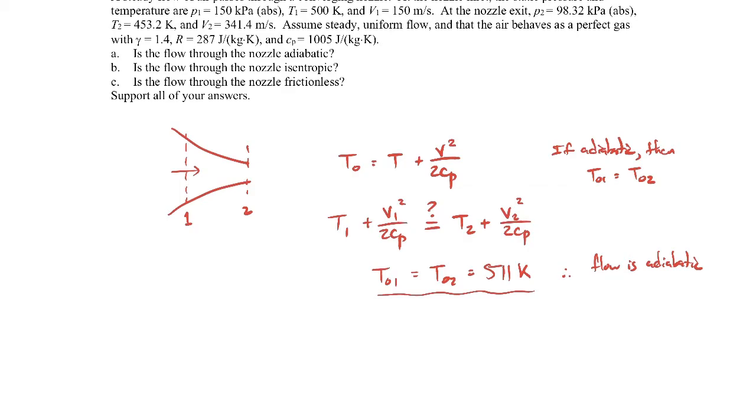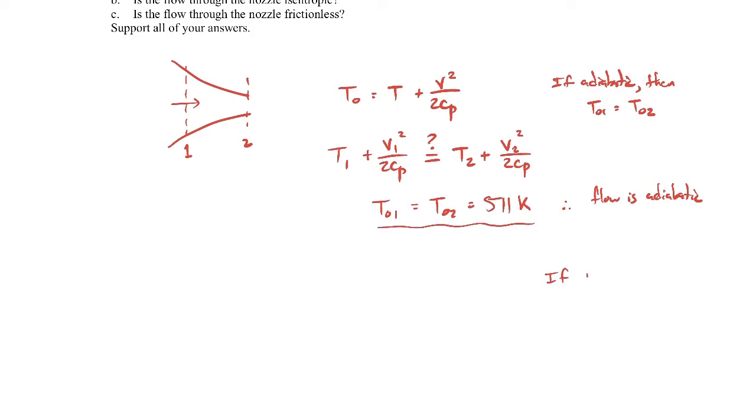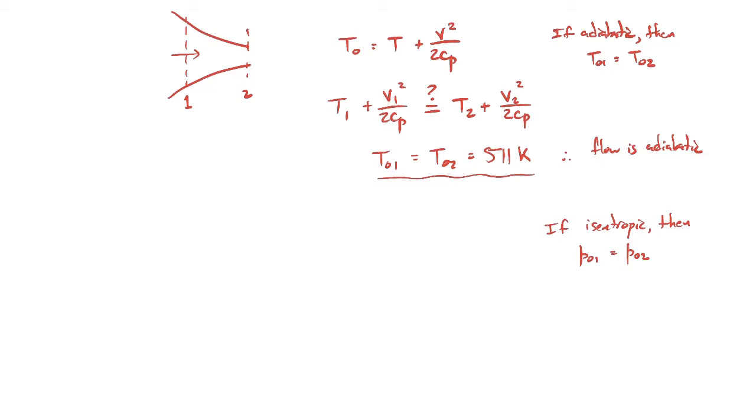Let's do the same thing now, but for the next part: is the flow isentropic? If the flow is isentropic, then the stagnation pressure should remain the same. Our expression for the stagnation pressure will come from the isentropic stagnation pressure ratio expression. That's the expression for the isentropic stagnation pressure ratio.